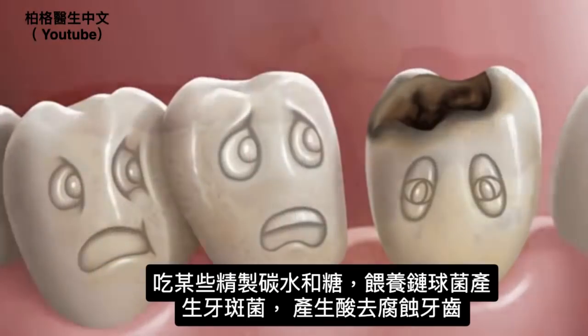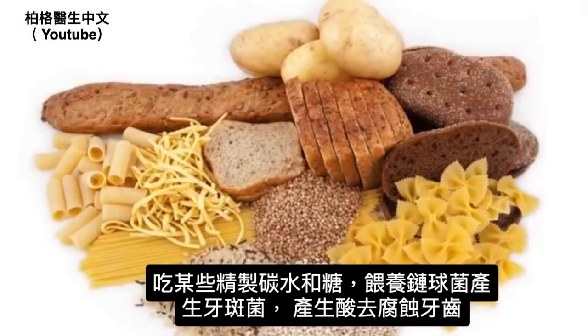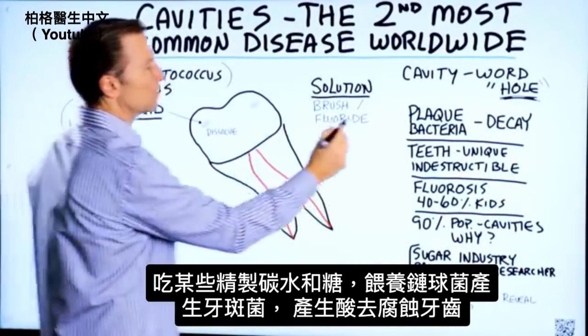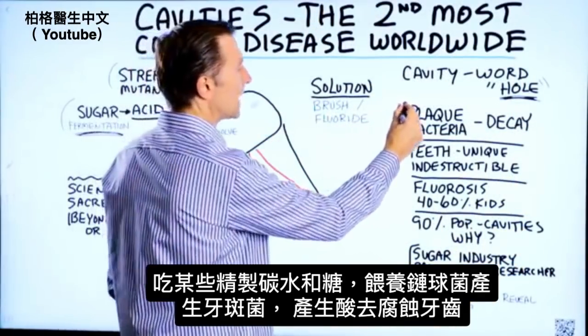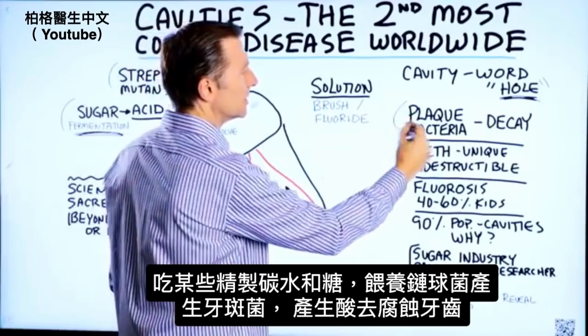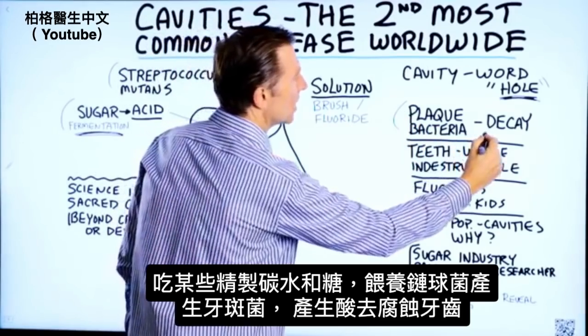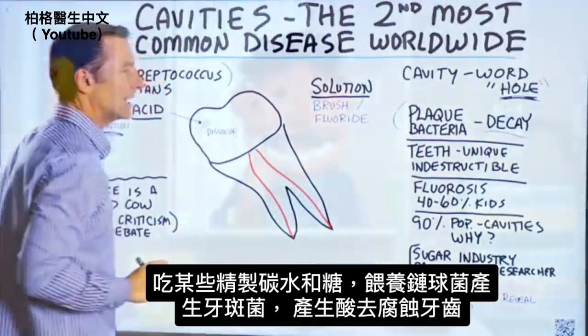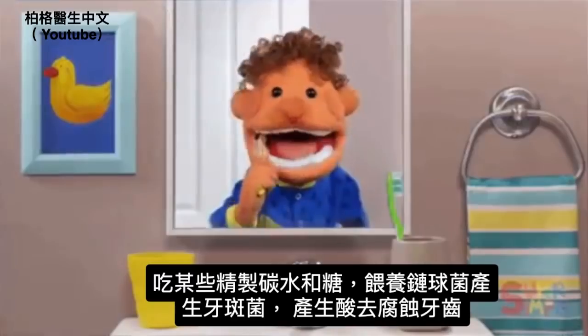When you consume certain refined carbohydrates and sugar, you're feeding this microbe and encouraging plaque-forming bacteria, which then causes decay because it's creating an acid.